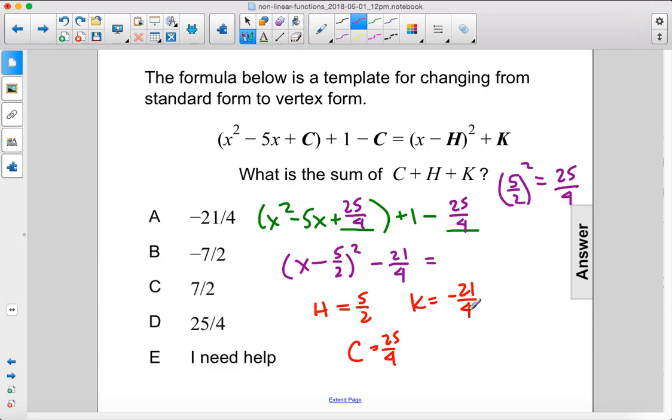When we add all of those together, we get 25 over 4 plus 10 over 4, because we changed this one to be over 4, minus 21 over 4, equals 14 over 4, which equals 7 over 2.